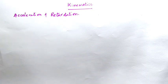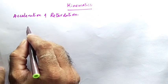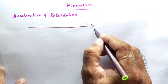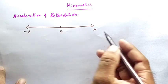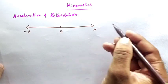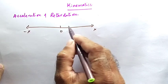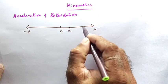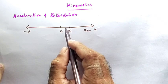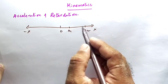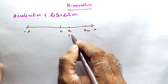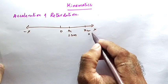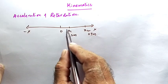Consider an object moving along the x-axis. This is the x-axis — this side is the negative x-axis and this side is the positive x-axis. I am observing the motion of the object along the positive x-axis from x1 to x2, where x1 is the initial position and x2 is the final position. Let us take x1 as 2 meters and x2 as 7 meters.